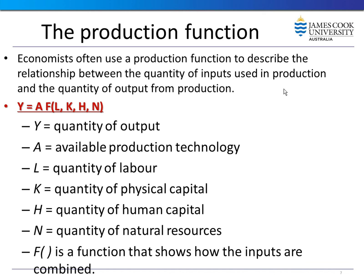Economists use a production function to describe the relationship between the quantity of inputs and the quantity of output. For example, a general production function can be written as Y = A × f(L, K, H, N), where L is labor, K is capital, H is human capital, N is natural resources, and A represents technology. Here A is referred to as Hicks-neutral technology.